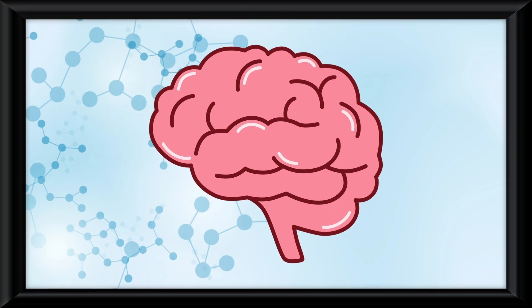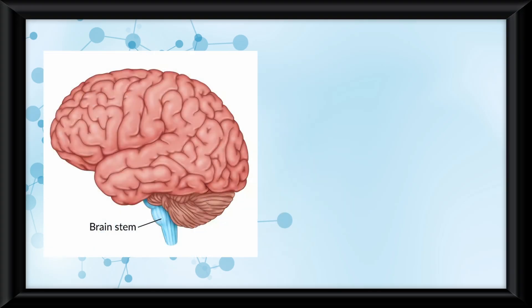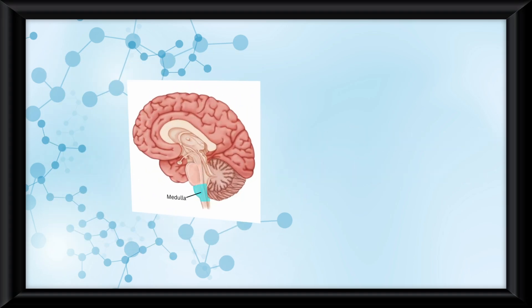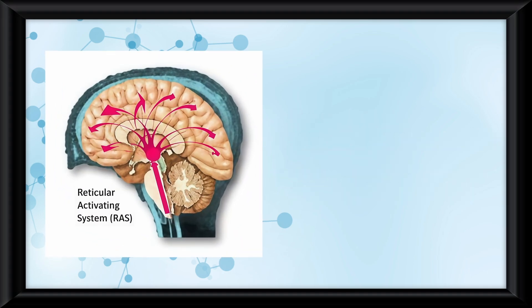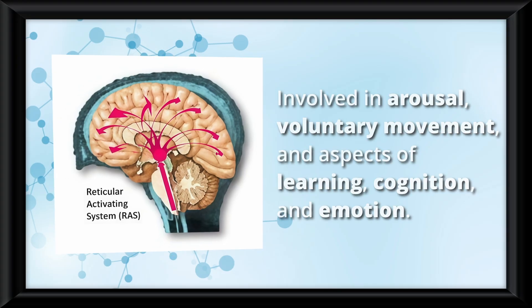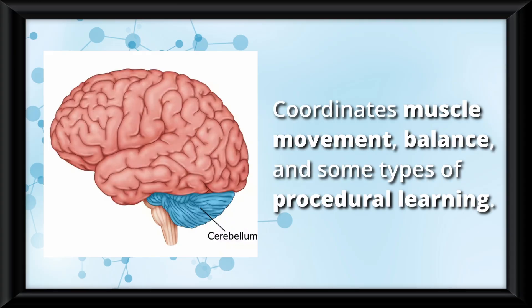This section covers the brain, meaning there will be a lot of parts to memorize. We'll start with the brain stem, the most basic structure, which controls automatic survival functions. Within it, the medulla regulates breathing and heart rate. Just above it is the reticular activating system, which is involved in arousal, voluntary movement, and aspects of learning, cognition, and emotion. The cerebellum, or 'little brain,' coordinates muscle movement, balance, and some types of procedural learning.